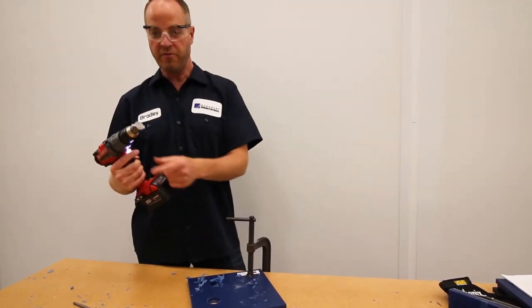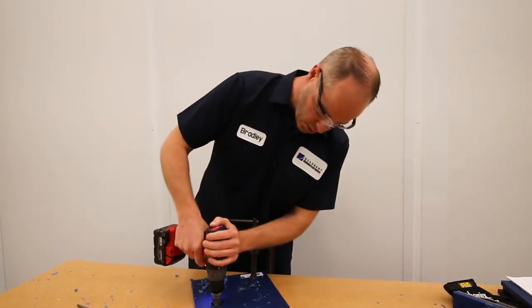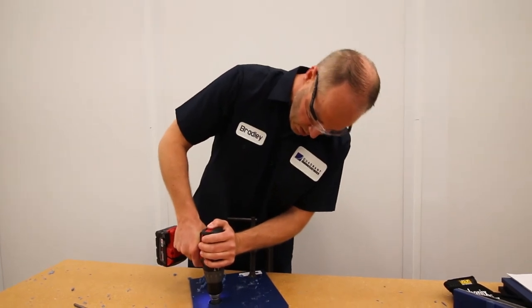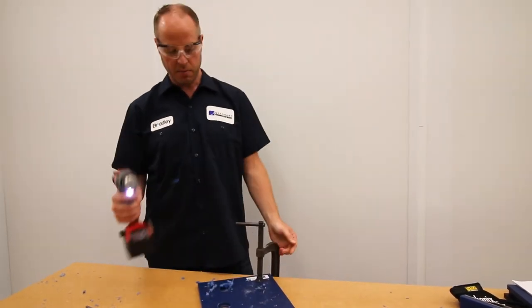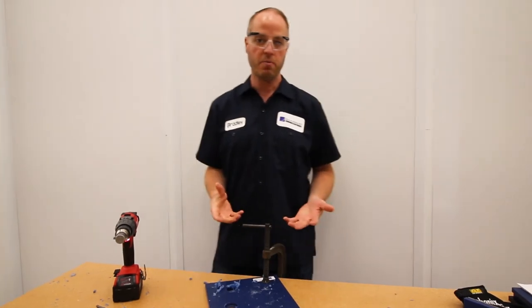Since the counterbore tool has a flat bottom, you can actually drill that on the table and it gives you an automatic stop depth so that you create the correct depth for the counterbore.